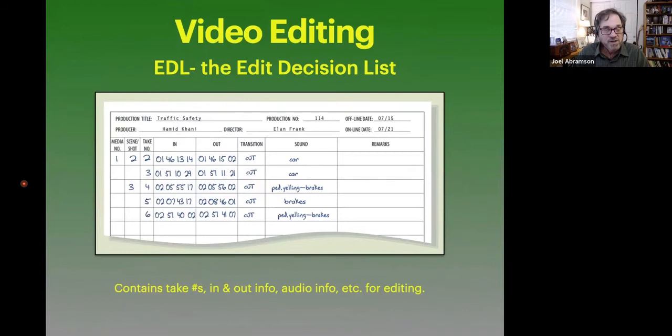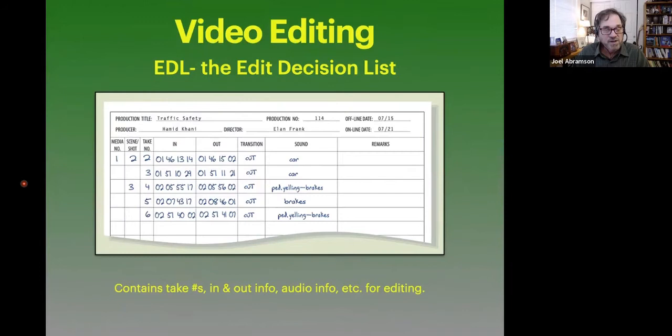Again, take notes. When you take notes you can take the take numbers, the in and out information, audio information for editing. This a lot of times is called the EDL, the edit decision list. And this happens to be a handwritten EDL. But a lot of times there are EDLs that are generated by the software itself, by some of the recording software that you're using or some of the editing software. So that's okay too. But this happens to be a handwritten example.